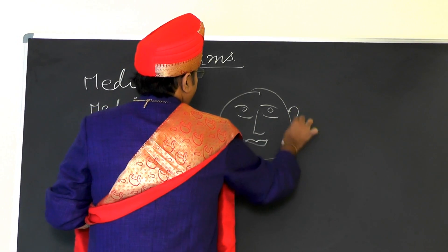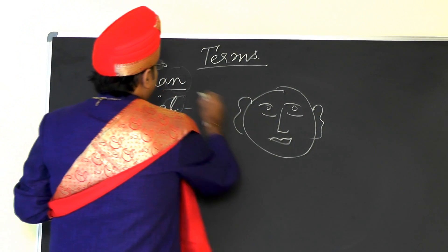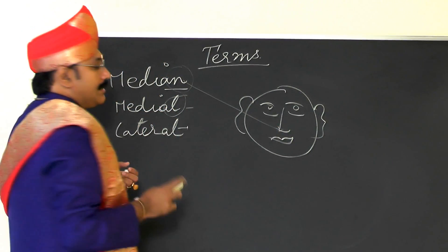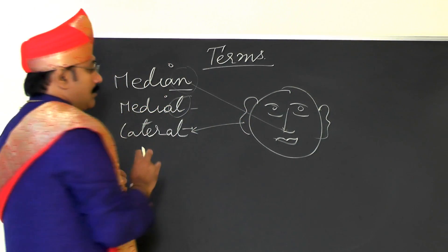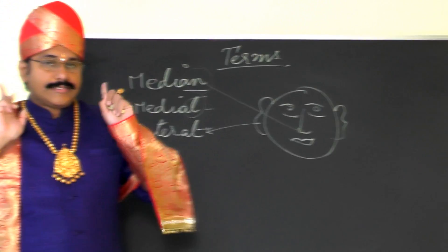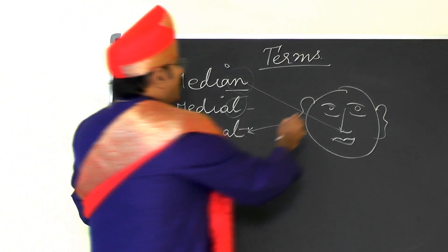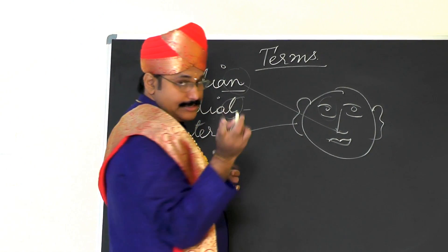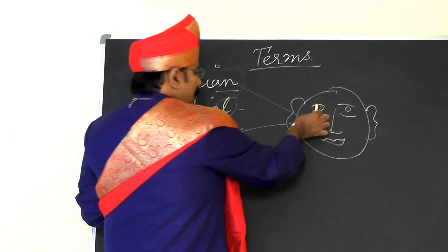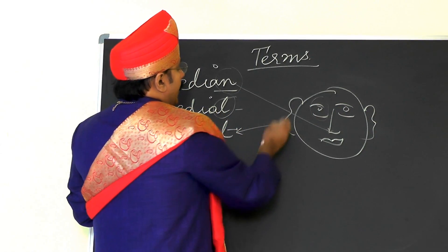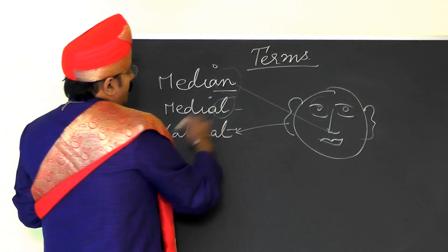For example, if this is the face, the nose is always median — always in the center. The ears are always lateral, away from the center. But if you consider the eyes: the eyes are lateral to the nose, and medial to the ears.